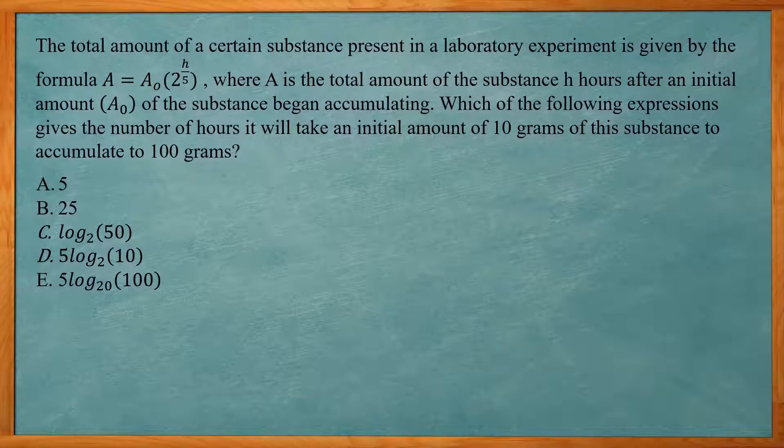This one reads, the total amount of a certain substance present in a laboratory experiment is given by the formula a equals a sub 0 times 2 raised to the h over 5 power, where a is the total amount of the substance h hours after initial amount a sub 0 of the substance began accumulating. Which of the following expressions gives the number of hours it takes an initial amount of 10 grams of this substance to accumulate to 100 grams.